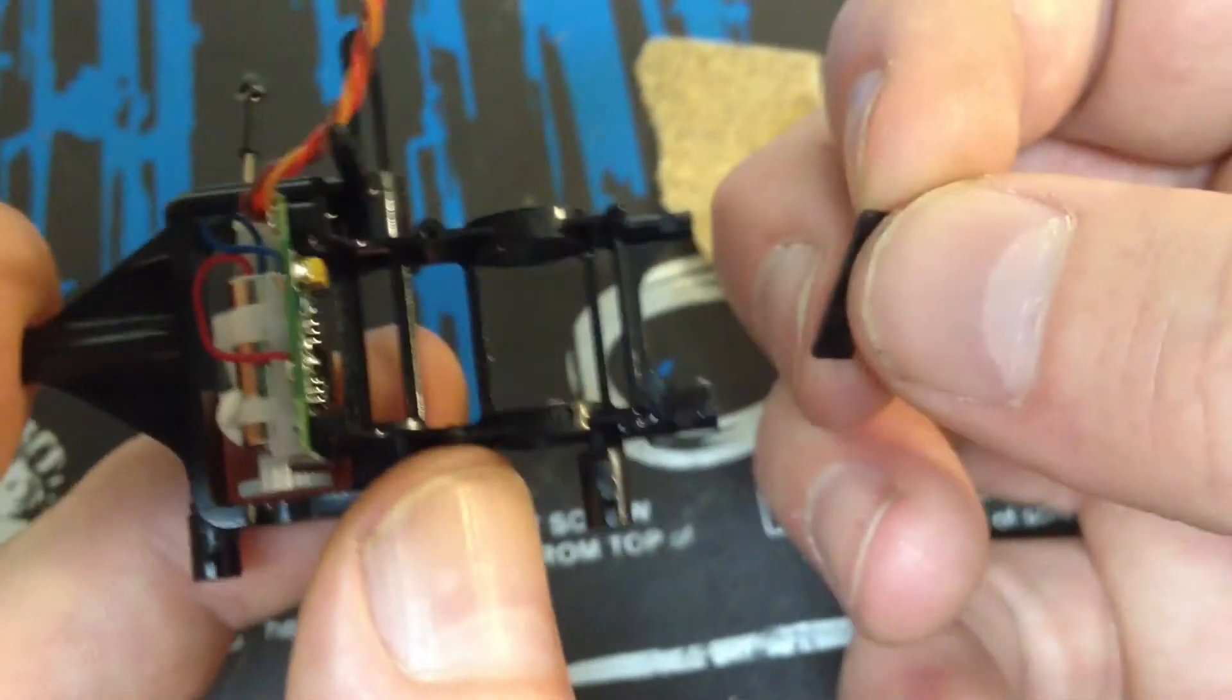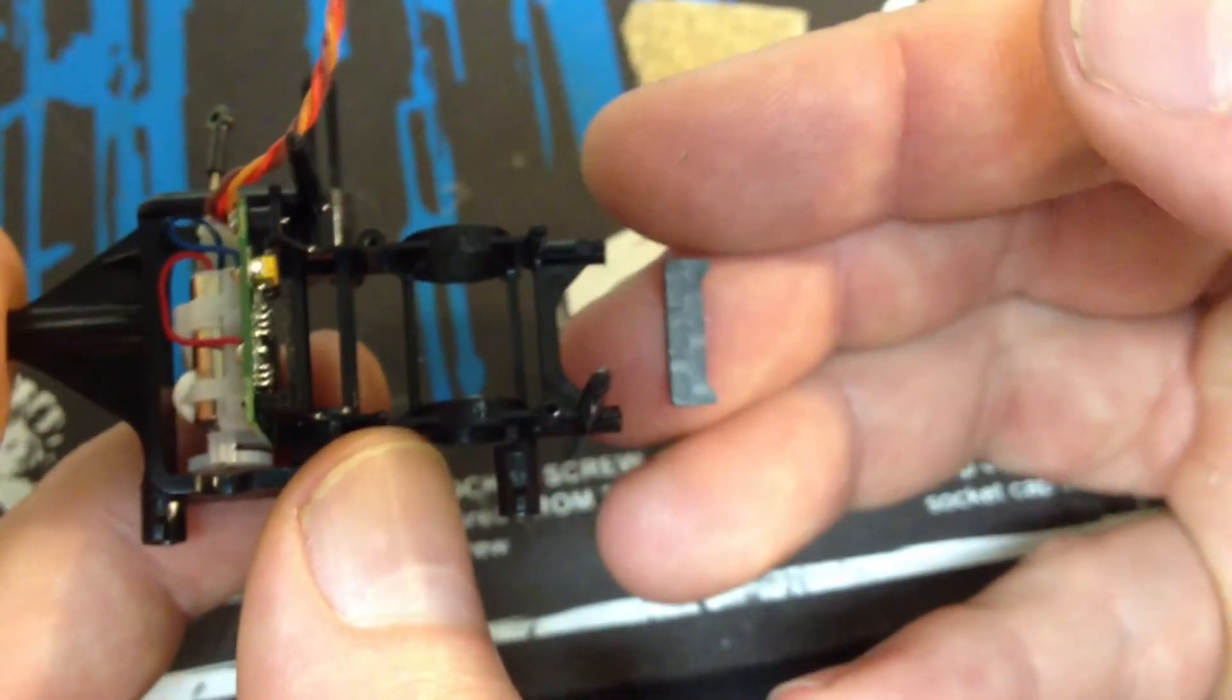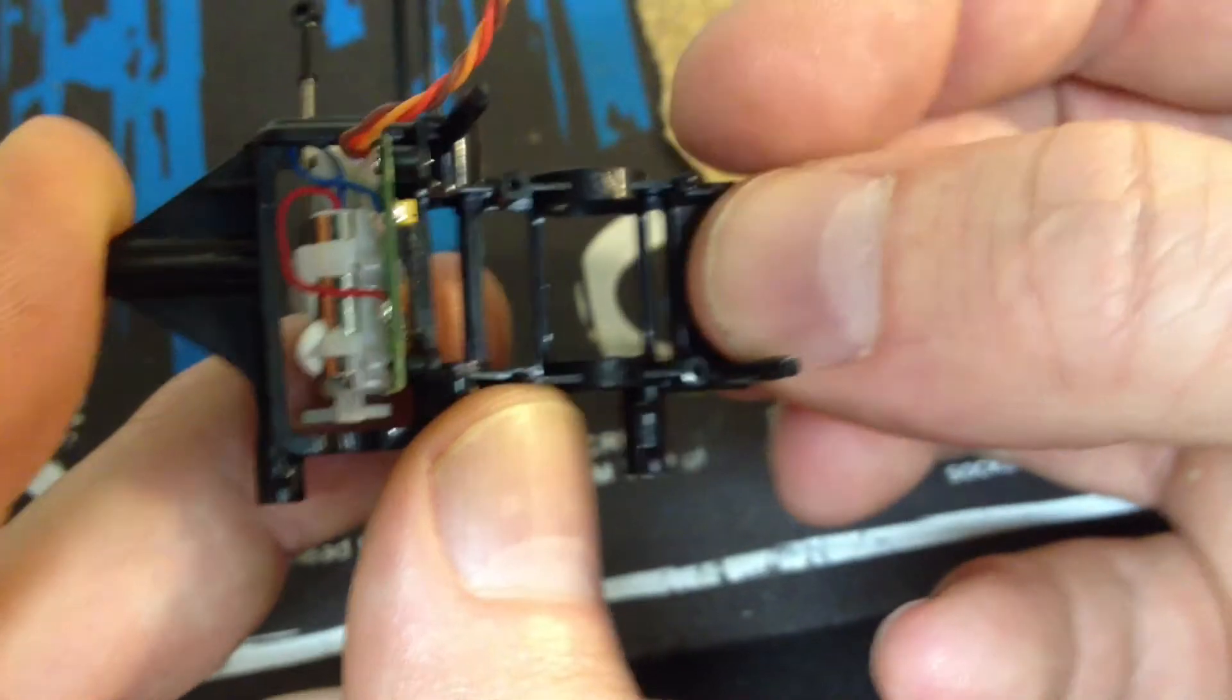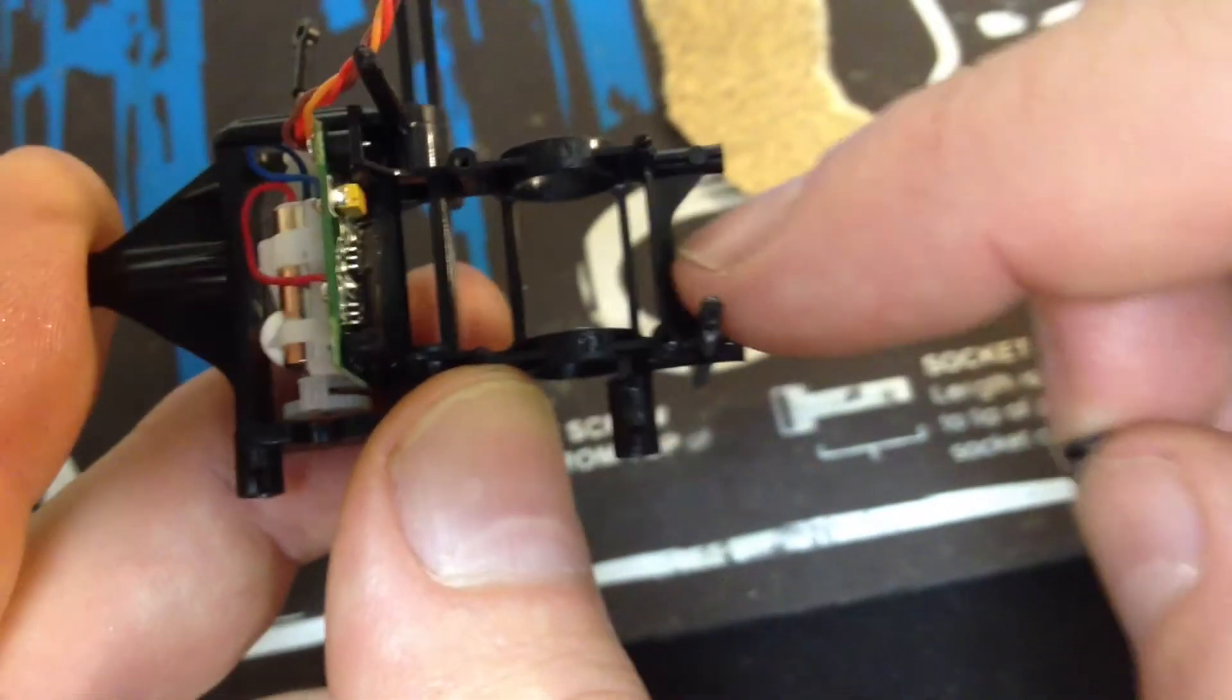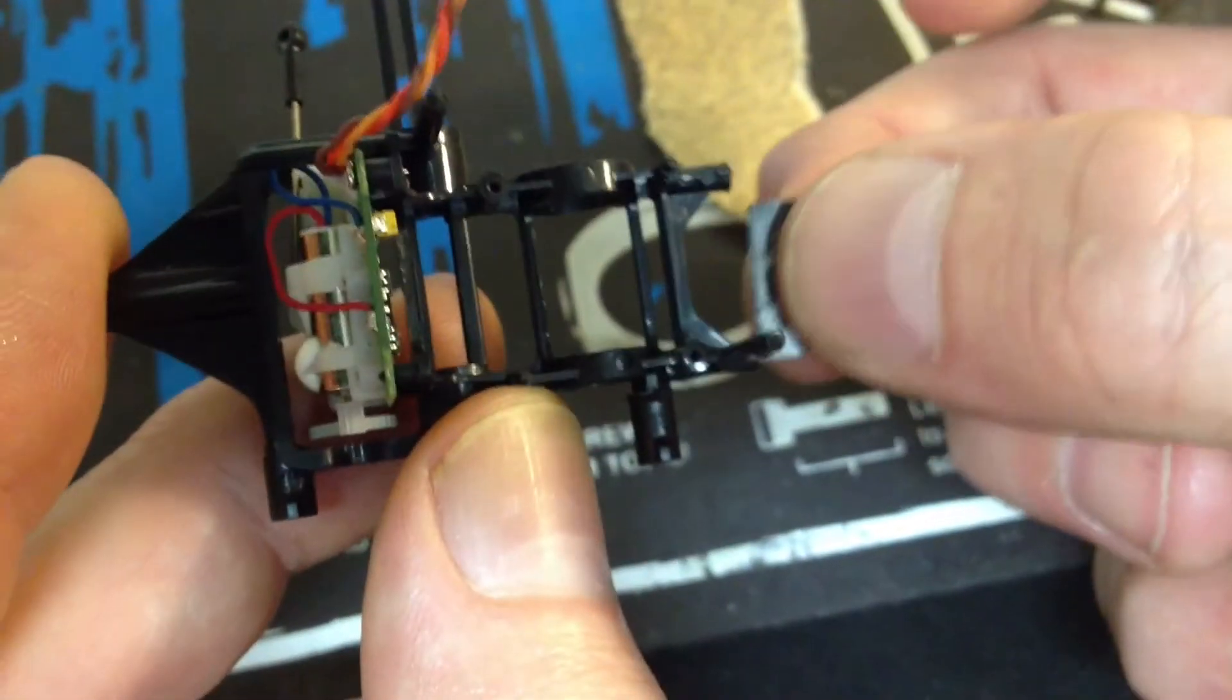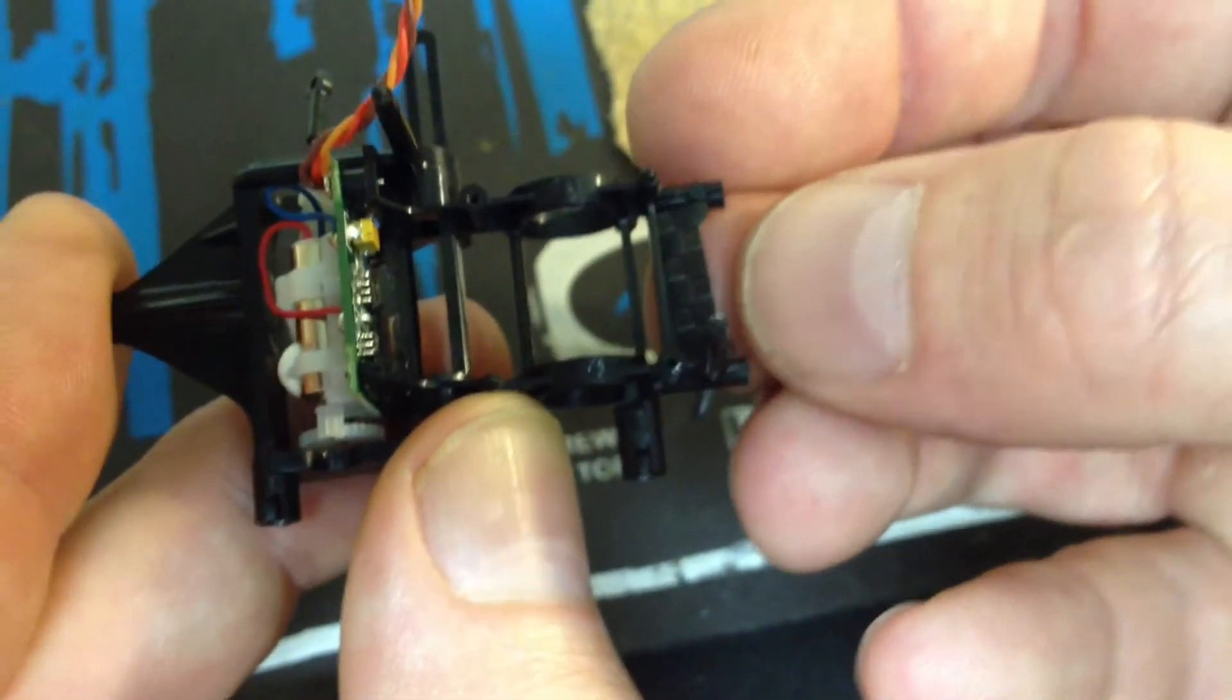Alright, next step is we're going to start the frame modification. This is the first little carbon piece. I'm going to sand down the back surface and we're going to glue it to right there on the frame. So we'll sand down that little piece there on the frame, the back side of the carbon piece, and we'll glue it right in place right there.